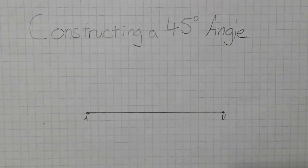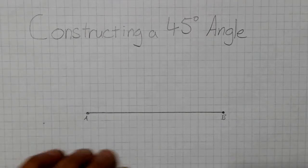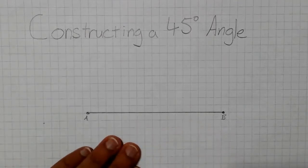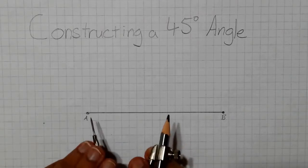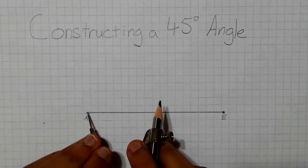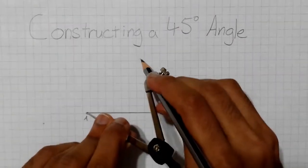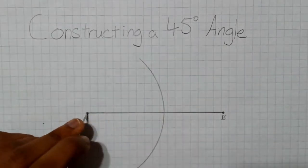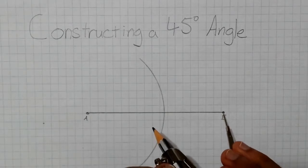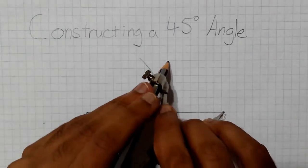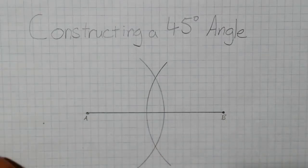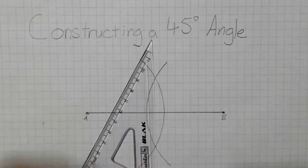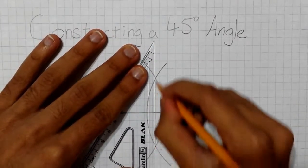Constructing a 45 degree angle. We'll start with line segment AB. To make a 45 degree angle, we first have to construct a perpendicular bisector. To do this, place the tip of the compass on point A and make two large arcs through the line segment — from point A and from point B. Then connect these two intersections to form the perpendicular bisector.